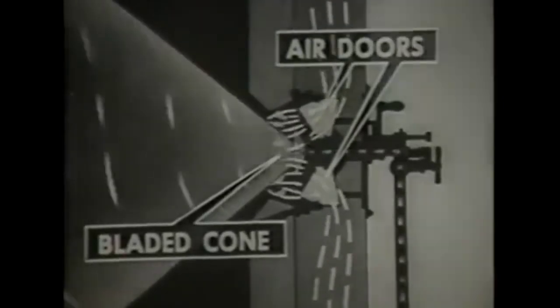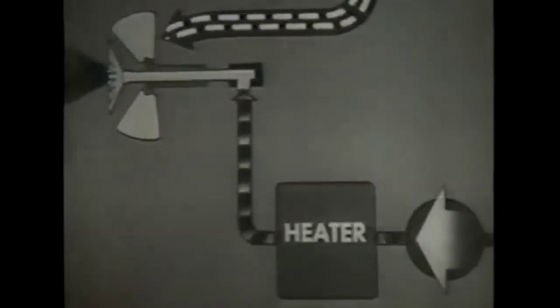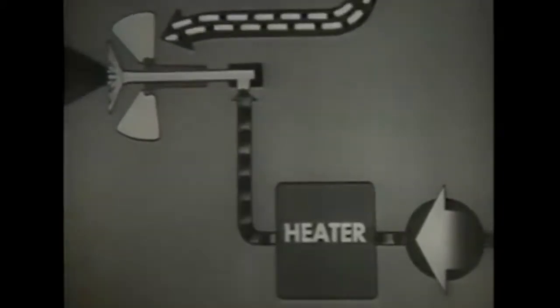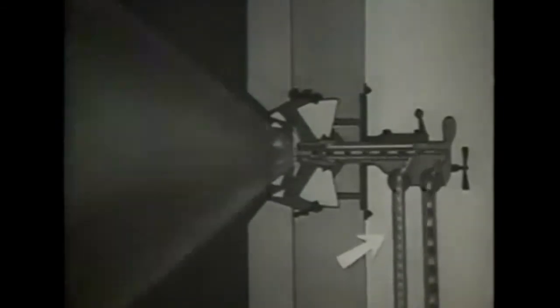In burners with mechanical atomizers of the pressure type, the sprayer plate atomizes the oil, heated and under pressure. The register gives the blast of air from the blower a rotating motion and mixes the air with the oil. You vary the pressure on the oil supply line to control the amount of oil entering the furnace. To control the amount of air entering the furnace, you vary the speed and number of the forced draft blowers. In the return flow burner, you vary the pressure on the return oil line to control the amount of oil entering the furnace.